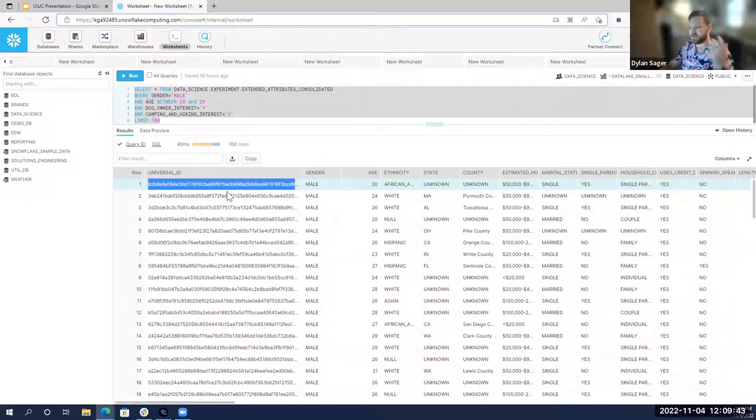They can tell us select all of these people who are male in their twenties, own a dog and are interested in camping and hiking. We take that and go through our partners to advertise through social media, through maybe mailing flyers, other things like this. All privacy safe. Our clients are never directly seeing your data and marketing directly to you. This is done in an anonymized high level fashion.